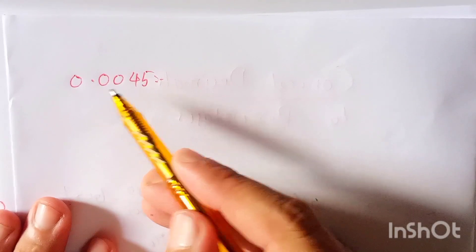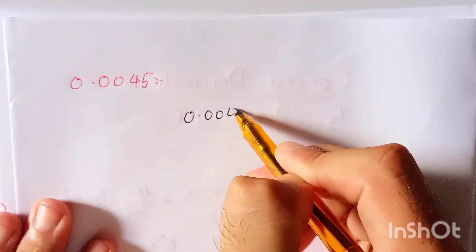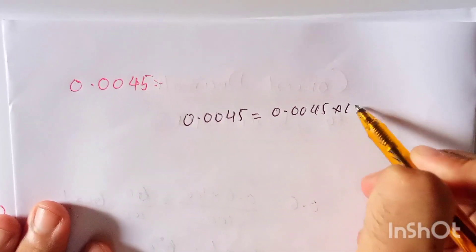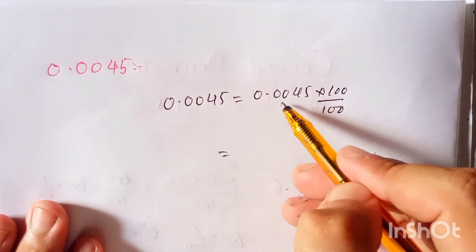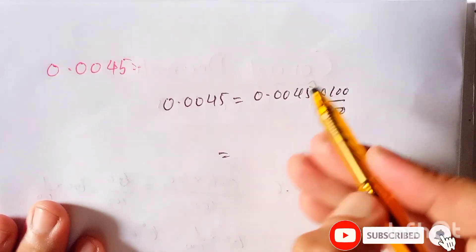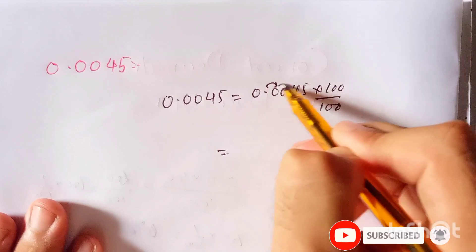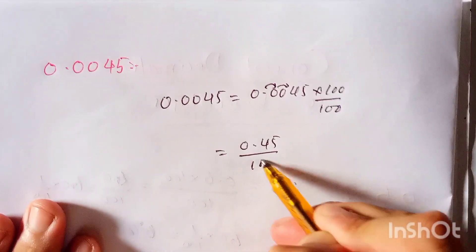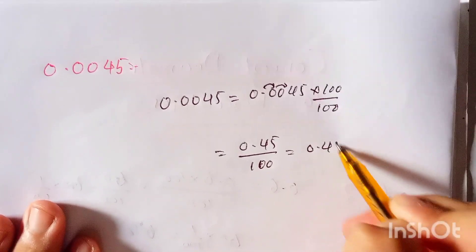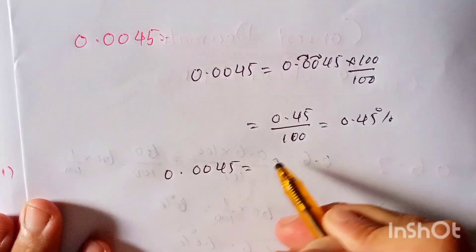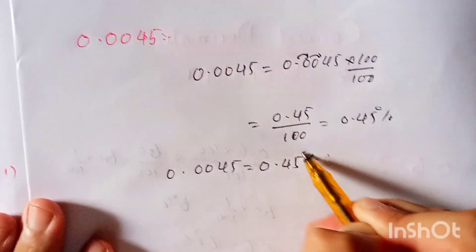And now here is another example. What is 0.0045 in percentage? So 0.0045 is equal to 0.0045 multiplied by 100, divided by 100. To multiply 0.0045 by 100, we will carry the decimal point two places from left to right, which is equal to 0.45 divided by 100.